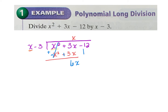Just like with long division, bring the next term down: minus 12. Now do the process again. What do I multiply x by to get 6x? Multiply by 6. So 6 times x is 6x, and 6 times negative 3 is negative 18. Adding the opposite: 6x and −6x cancel, and −12 and +18 give 6. I have nothing more to bring down, so 6 is my remainder — x cannot go into 6.